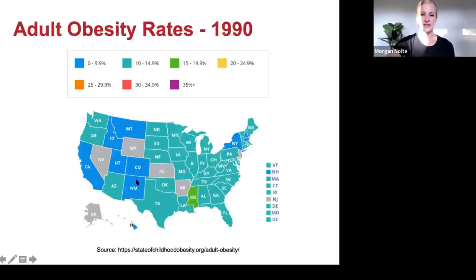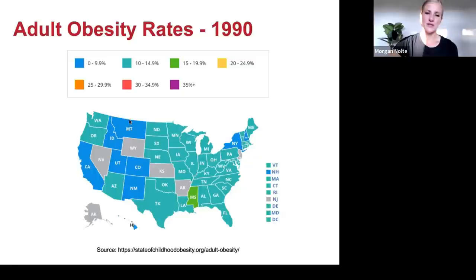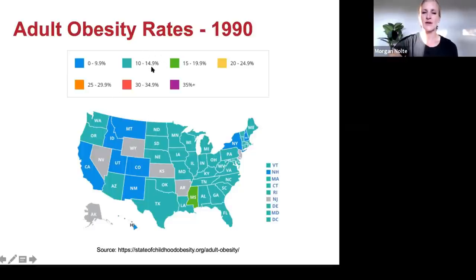This is really interesting. The website stateofchildhoodobesity.org gives maps for adult obesity rates starting in 1990. I'm in Nebraska, so I'll use it as an example to show how obesity is rising. In 1990, about 10 to 15% of adults in Nebraska were obese — that means a BMI of 30 or greater, not including the overweight category.